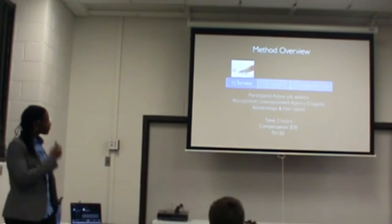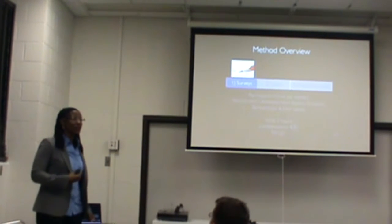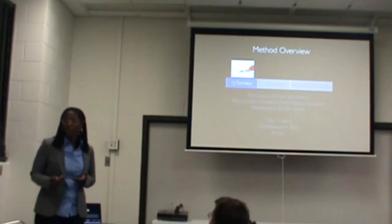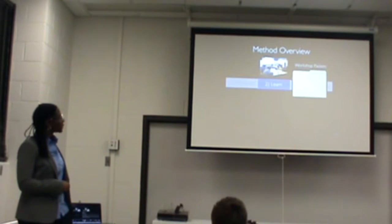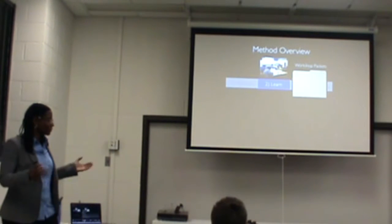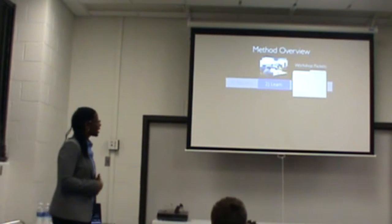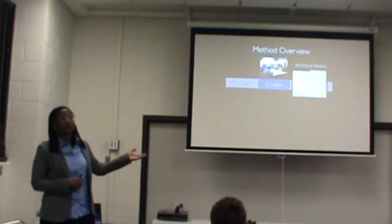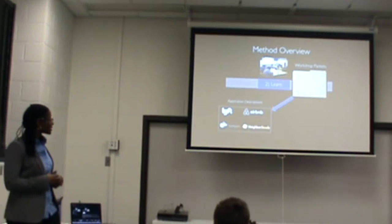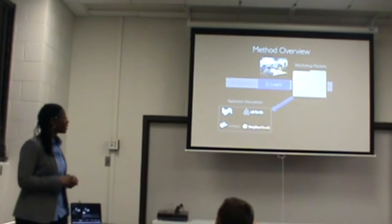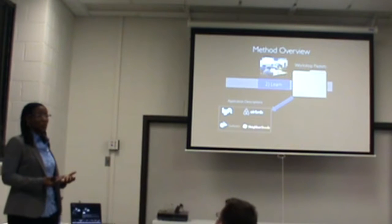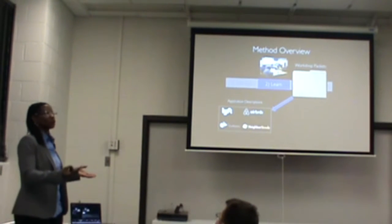In the learning session, we collected basic demographic information and wanted to baseline what people knew about the sharing economy. Groups of three to four participants received workshop packets containing application descriptions from four instances of the sharing economy: what was available or would be available in Detroit. TaskRabbit hadn't deployed in Detroit yet, but said they'd be there soon, so we went with it. Lyft is a real-time ride-sharing service; Airbnb allows you to share your home.